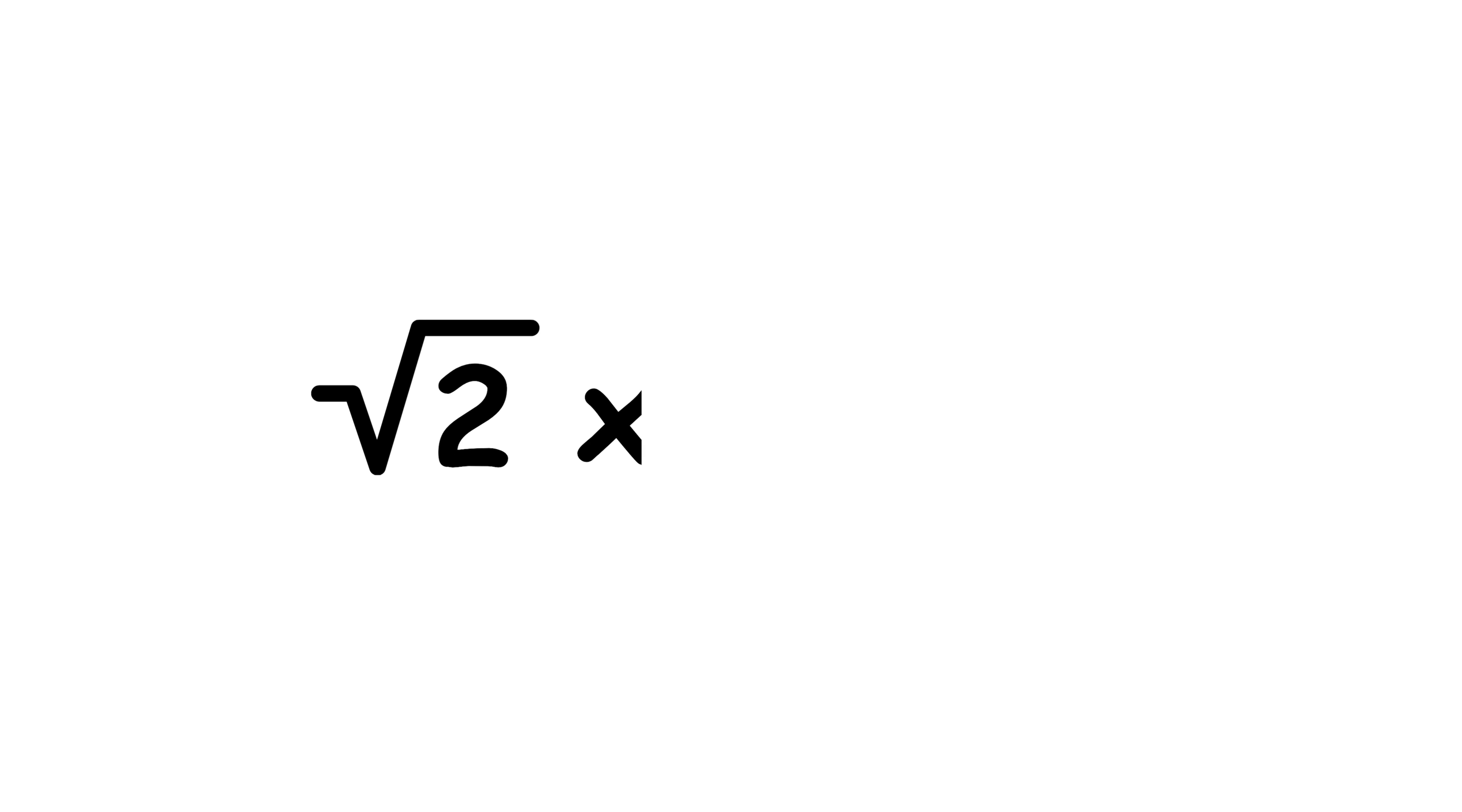The square root of 2 times itself is just 2 by definition. We have a positive square root 2 and a negative square root 2 that cancel out. And finally, 2 minus 1 equals 1. That gives us the value of the expression.